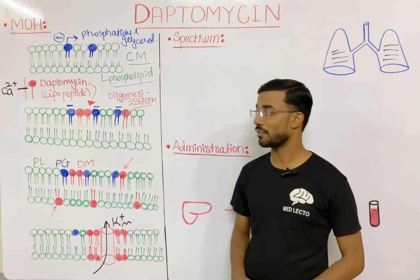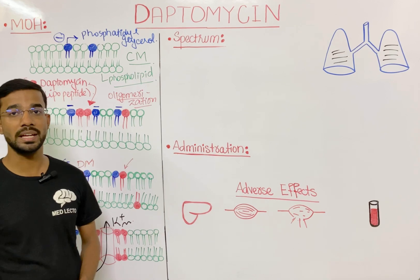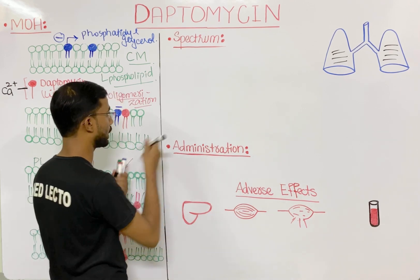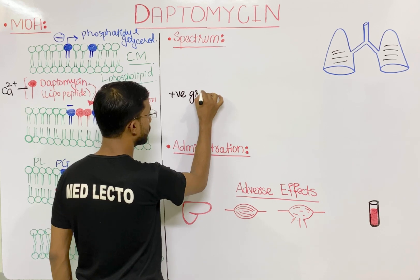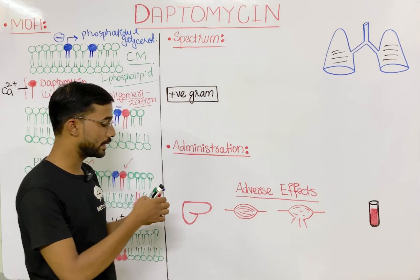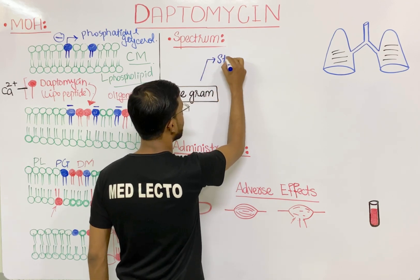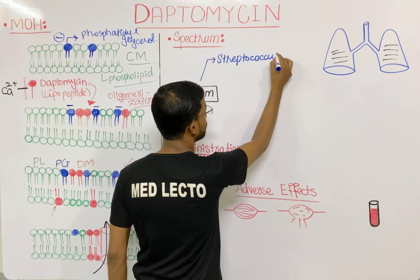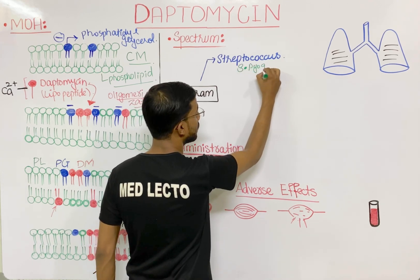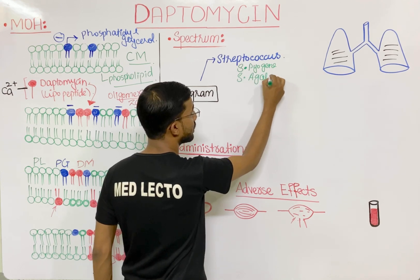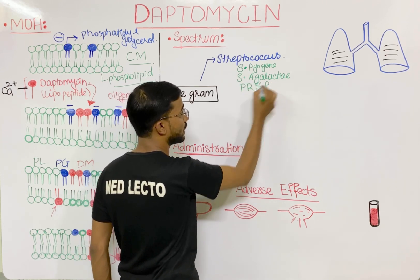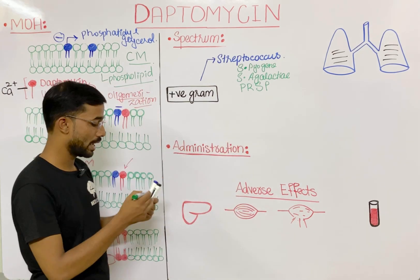Daptomycin covers gram-positive bacteria. Its spectrum includes Streptococcus — specifically Streptococcus pyogenes, Streptococcus agalactiae, and most importantly, penicillin-resistant Streptococcus pneumoniae.